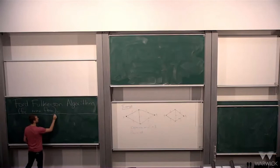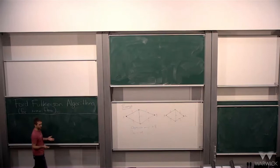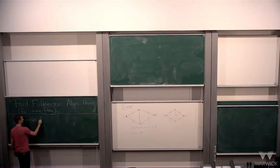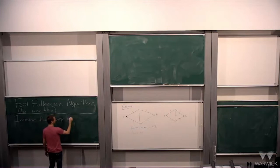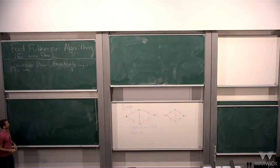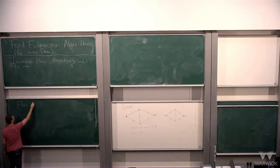So basically, you want to find the max flow. The key thing here is we're going to iteratively increase the flow step by step until we get to a maximum. And the way that you know it's maximum is that you find a cut which has the same capacity as the flow — that's what the max flow min cut theorem says.